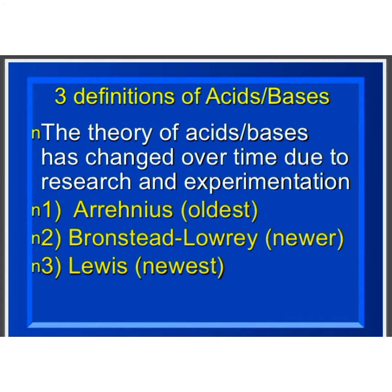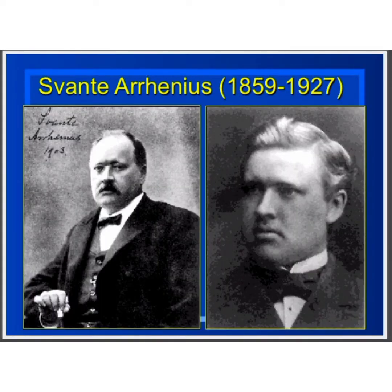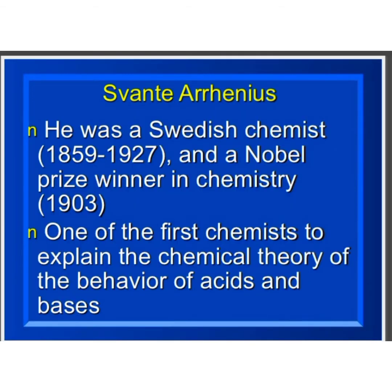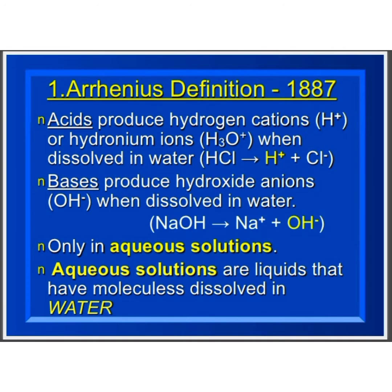The theory of acids and bases has changed over time due to research and experimentation. Arrhenius's approach was the oldest theory. He was a Swedish chemist and Nobel Prize winner in chemistry, and one of the first chemists to explain the chemical theory of the behavior of acids and bases. According to Arrhenius, acids produce hydrogen cations or hydronium ions when dissolved in water, and bases produce hydroxide anions when dissolved in water. These ions are produced only in aqueous solutions.